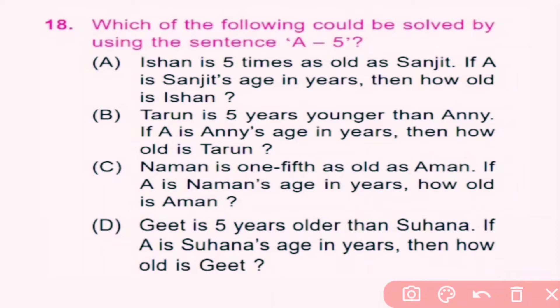Question number 18: Which of the following could be solved by using the expression a − 5? Option A: Ishan is 5 times as old as Sanjit. If a is Sanjit's age, then Ishan's age is 5a, so it uses the expression 5a. Option B: Tarun is 5 years younger than Anji. If a is Anji's age in years, then Tarun's age is a − 5, so it can be solved using the a − 5 expression.